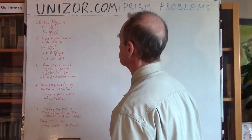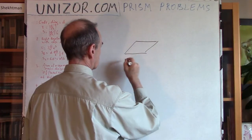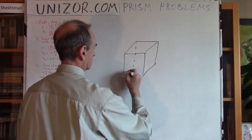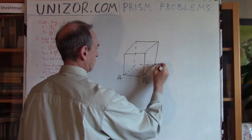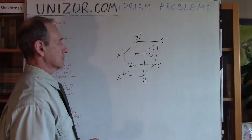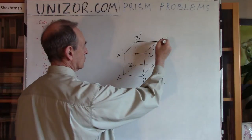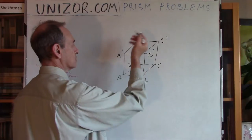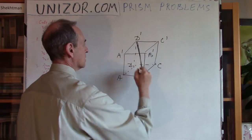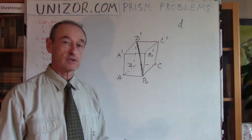Problem number one. You have a cube, which is just a particular case of a prism. What's known about this cube is the length of its main diagonal from A to C', which is the same as from B to D'. So this is my main diagonal, and it's equal to d. What I have to find out is its volume and the total surface area.